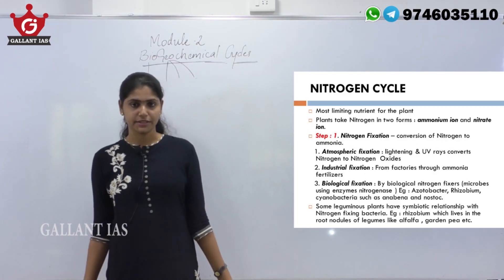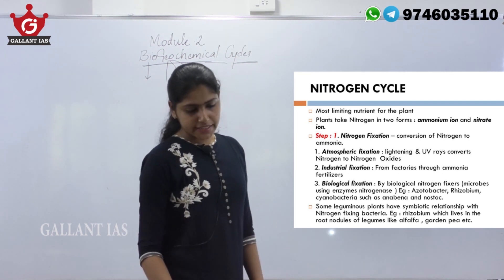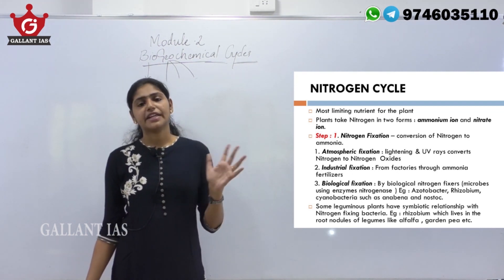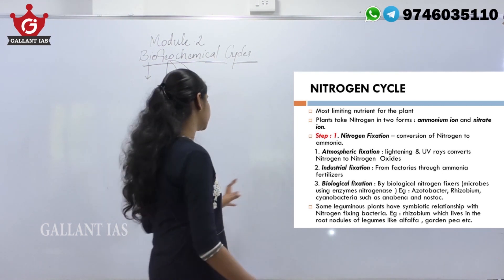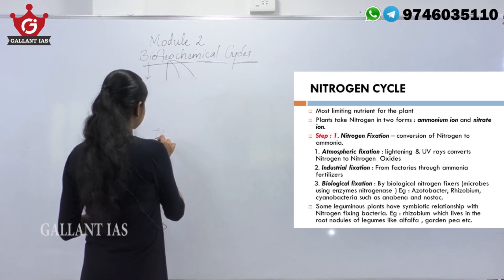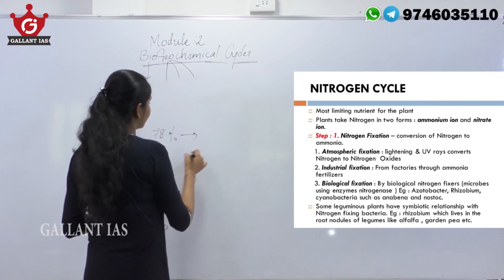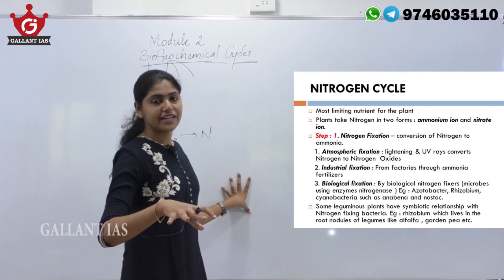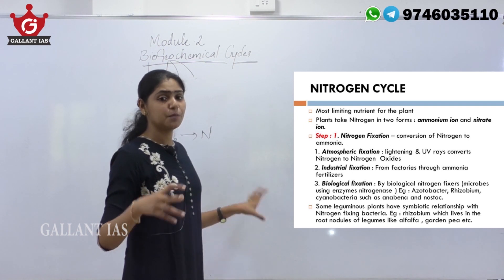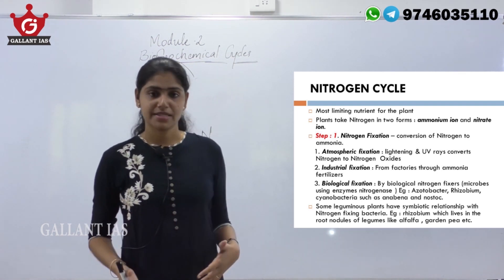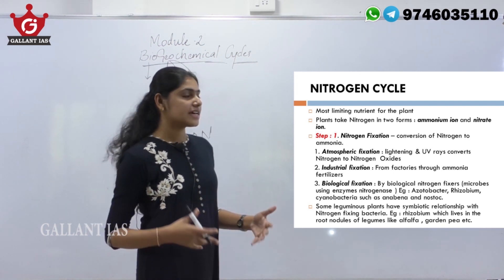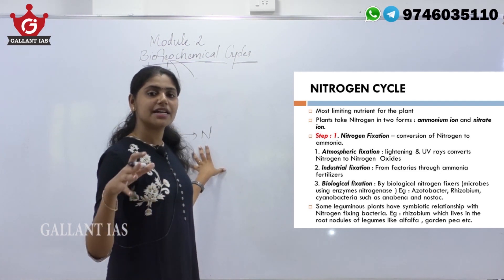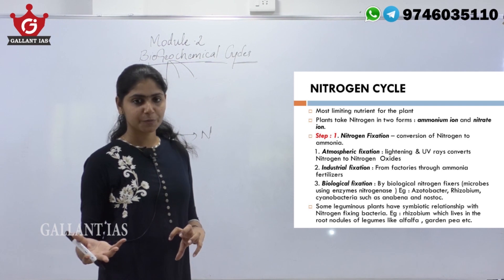Next is the nitrogen cycle. 78% of air on Earth is composed of nitrogen, but ironically, this nitrogen is the most limiting nutrient for plants. Even though 78% of Earth's air contains nitrogen, it is considered a limiting nutrient for plants.